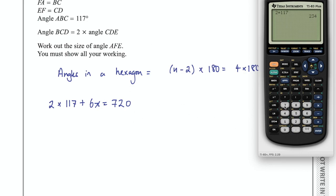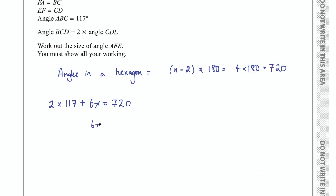So that's 234, and then I want to subtract that from 720. So 720 minus 234, that's 486. So what we're going to end up with here is 6x equals 486.